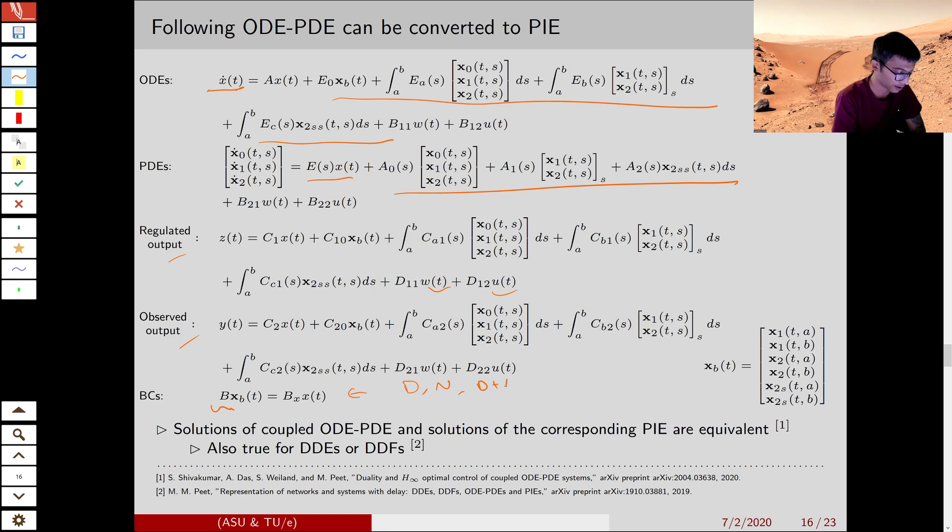which is a very general form, because it can be used to represent Dirichlet, Neumann, Mixed, Sturm-Liouville, etc., a general class of boundary conditions, as long as B satisfies a certain rank constraint.